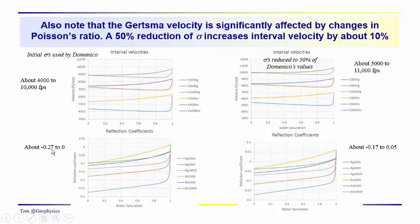The reflection coefficients, consequently, are reduced. Over here, we have a range from minus 0.27 to 0. Over here, minus 0.17 to 0.05. The values of the Poisson's ratio that you use in the Geertsma velocity are certainly going to affect the results that you model.